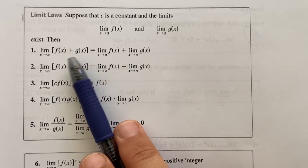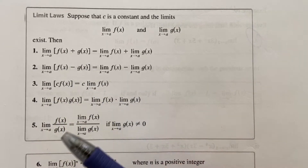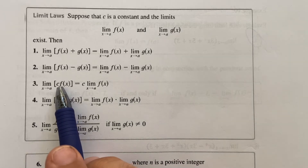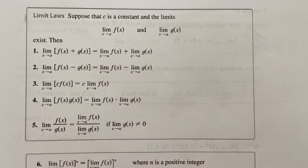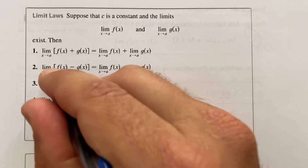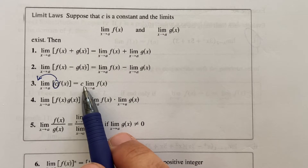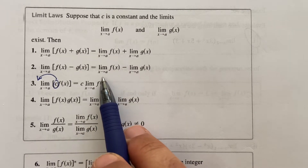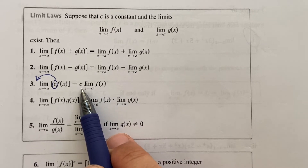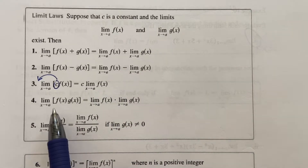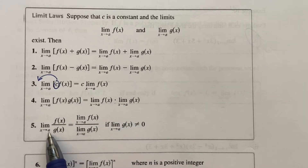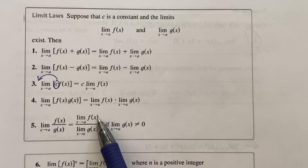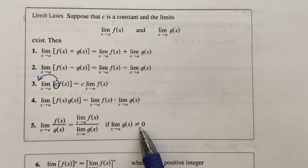If you have a constant that doesn't depend on x at all — which is the variable that the limit cares about — then that constant can come out front. Through multiplication, you move that constant out front and then simply evaluate the limit, then multiply afterwards. If you have the limit of a product, you can change that into the product of limits. If you have the limit of a quotient, you can change that into the quotient of limits, where the denominator is not zero.